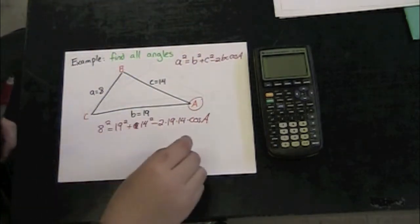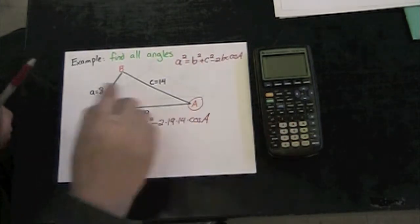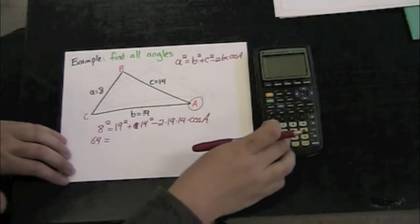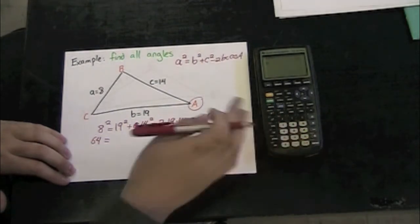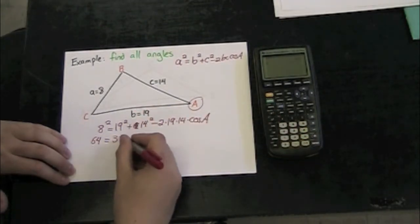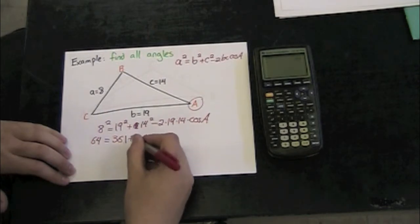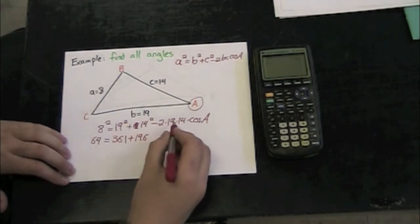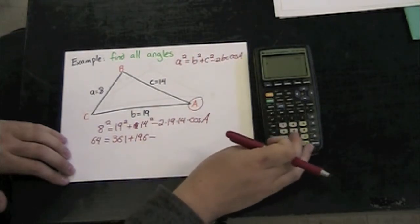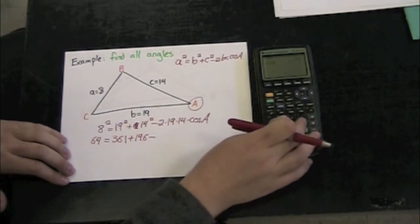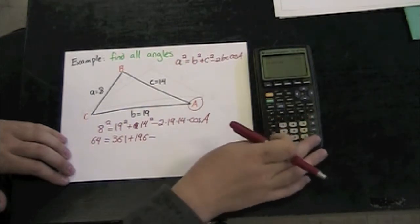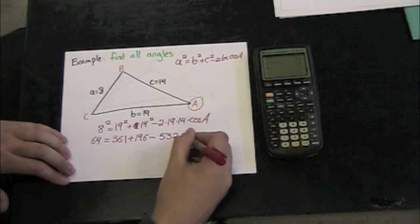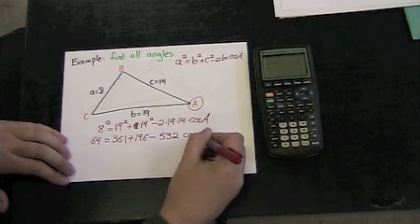And if I begin to calculate those values, 8² I know is 64. 19² is going to be 361. 14² is going to be 196. 2 times 19 times 14 is going to equal 532. And then I have cosine of angle A.